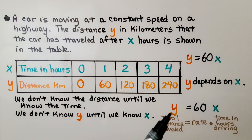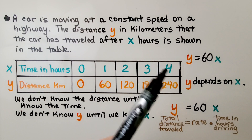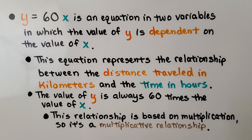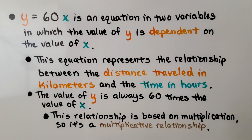We have this equation: Y, the total distance traveled, is equal to 60 — that's our rate, the distance traveled in one hour — multiplied by x, the time in hours driving. Y = 60x is an equation in two variables in which the value of y is dependent on the value of x. This equation represents the relationship between the distance traveled in kilometers and the time in hours. The value of y is always 60 times the value of x, so it's a multiplicative relationship.